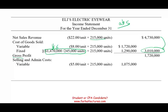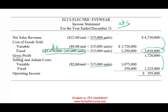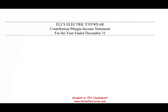For selling and administrative costs: the variable component is 215,000 units times $5 sales commission. Fixed costs are $250,000. Taking gross profit minus selling and administrative expenses gives us an operating income of $395,000 under absorption costing. Copy that number down.